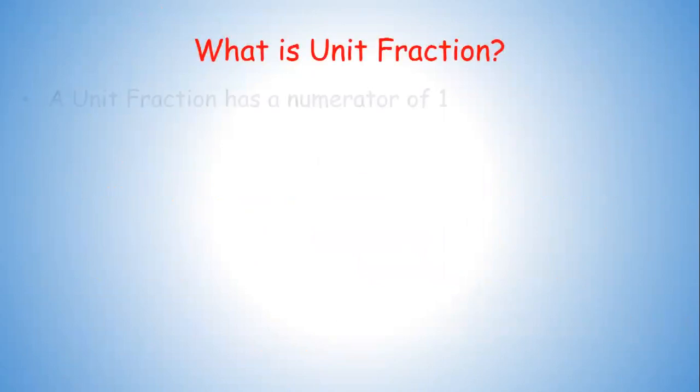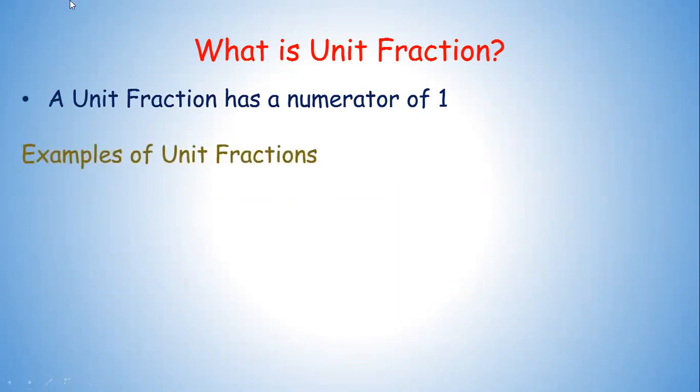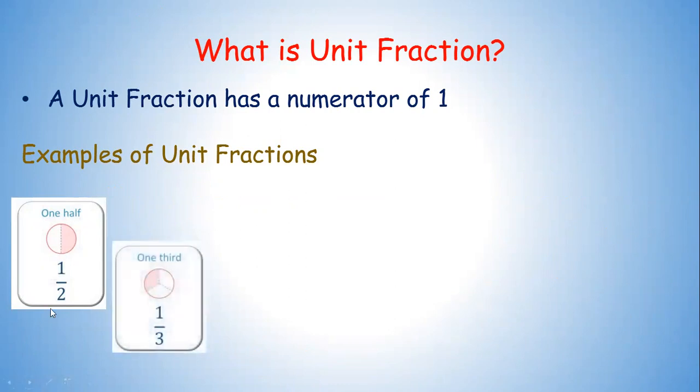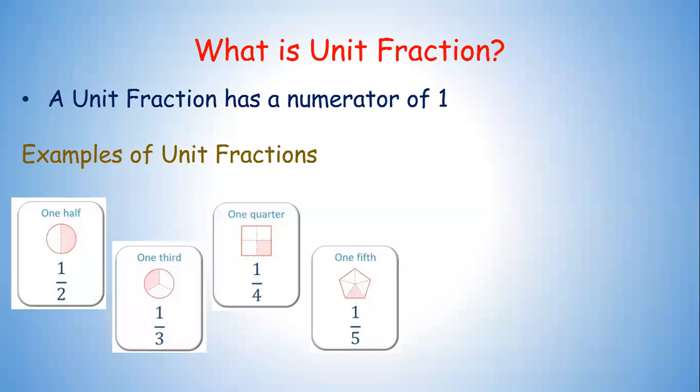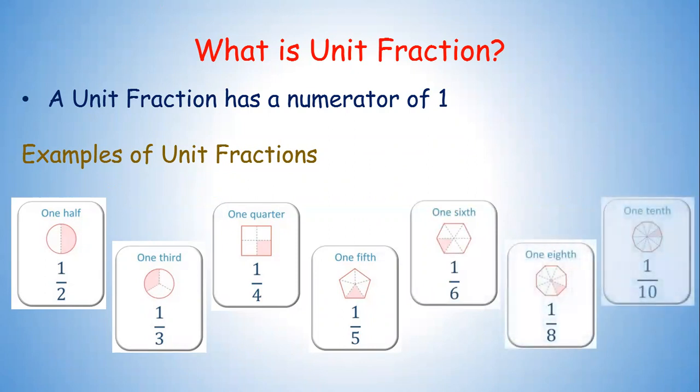So what is unit fraction? Unit fraction has a numerator which is always one. For example, half. Half is a unit fraction, which is quite familiar. We have used half a lot in our previous lessons. Then we have one third. Then we have a quarter. Then we have a fifth. One fifth or fifth, you can say, one sixth, one eighth, one tenth. Well, do you think we missed a fraction here? I think we missed this fraction. One seventh, right? Well, that is also another type of unit fraction. So all the fractions which have a numerator of one is called a unit fraction. Well, that was easy to remember, right?